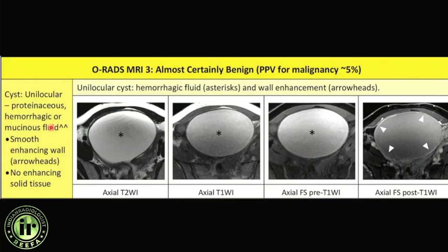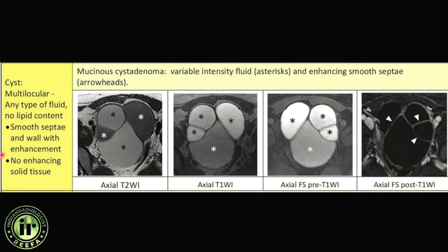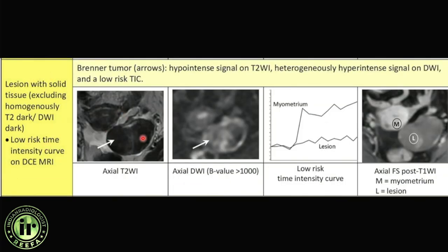Dilated fallopian tubes — hematosalpinx, hydrosalpinx — and para-ovarian simple cysts are all ORADS 2. ORADS 3 includes unilocular cysts with proteinaceous, hemorrhagic, or mucinous fluid, and hemorrhagic fluid confirmed not to be endometriosis but with an enhancing wall. The enhancing wall is what elevates these to ORADS 3. A multilocular cyst with smooth septal or wall enhancement also becomes ORADS 3 — no enhancement is ORADS 2, enhancing wall moves it to ORADS 3.